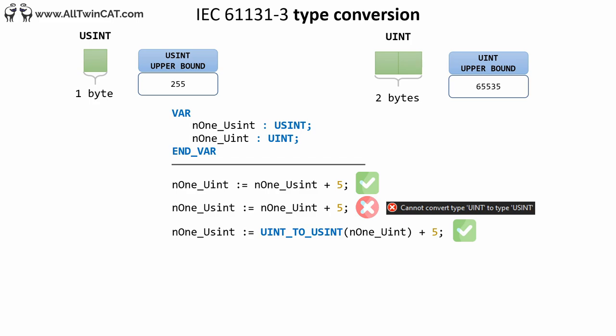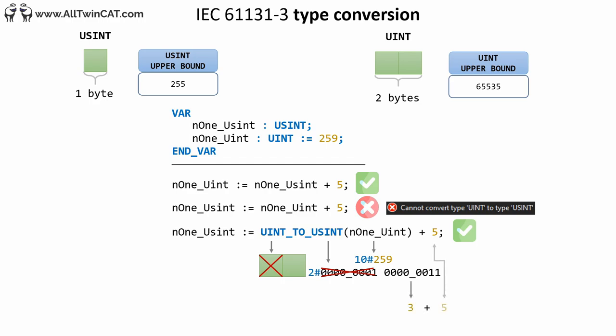What we need to do is perform an explicit type conversion from UINT to USINT. That is, we need to convert the value of the bigger data type to a value that can fit inside the smaller one. If the UINT has a value of 259 — which is bigger than the USINT maximum of 255 — representing 259 in binary gives us 2 bytes of 8 bits each. The type conversion simply removes the left byte, leaving only the right byte. The right byte's value is 3 in base 10, plus the 5 from before, giving us the result 8 — a value that can be stored in a USINT.